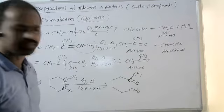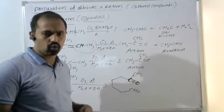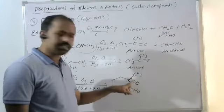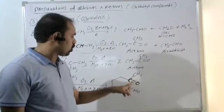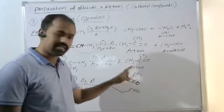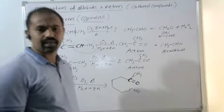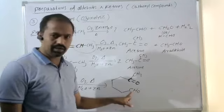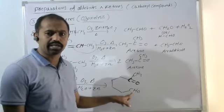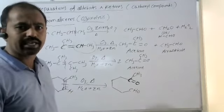What is the IUPAC name of this product? Counting the carbons: 1, 2, 3, 4, 5, 6, 7 — total 7 carbons, so the parent chain is heptane. The aldehyde group (CHO) is the chain-terminating functional group given priority. Carbon 6 has the keto (oxo) group. So the IUPAC name is 6-oxoheptanal. That is the correct IUPAC name for the ozonolysis product.